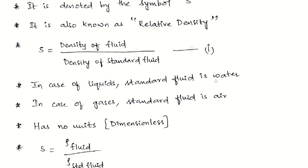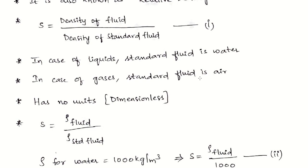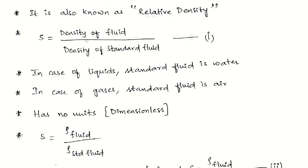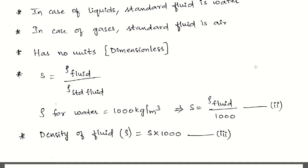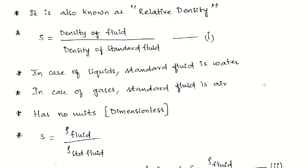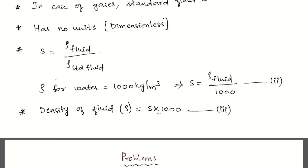As per the definition, S = density of fluid / density of standard fluid. Since density has no units when divided by the same units, S is dimensionless. For liquids, the standard fluid is water (density = 1000 kg/m³), so S = density of fluid / 1000, and rearranging gives density of fluid = S × 1000. Remember all three forms of this formula.